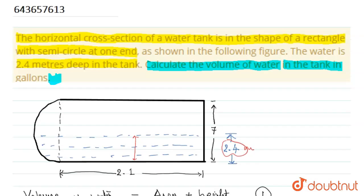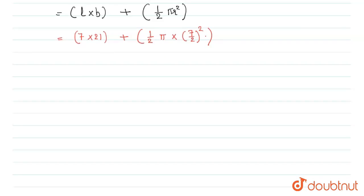We have taken r equals 7 by 2 because this cross section is given 7, so 7 will be the diameter of the circle, and therefore we divide it by 2.